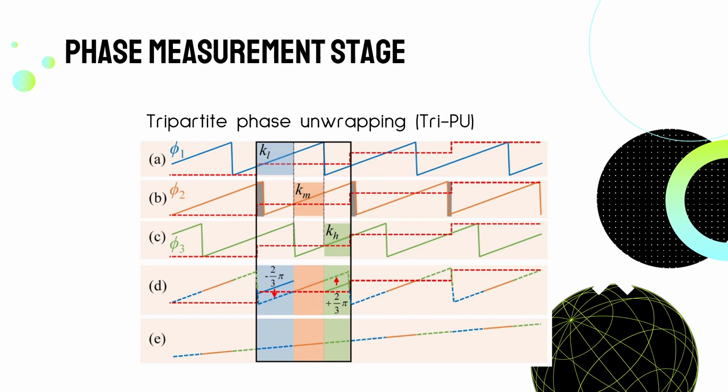By mapping the further divided K parts to the middle part of the three wrapped phases and combining them together, jump error can be eliminated. As only the unaffected part of the wrapped phases are used as shown by figure D, the final unwrapped phases can then be obtained as shown in figure E.